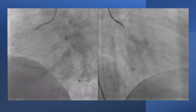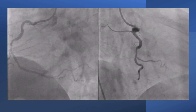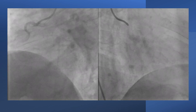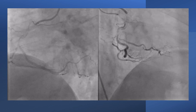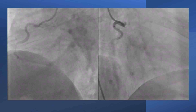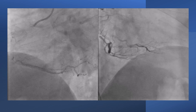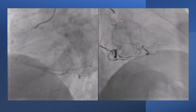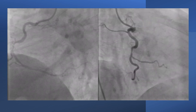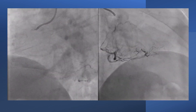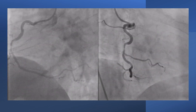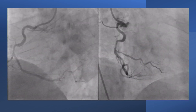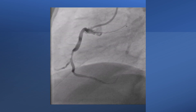This is a 50-year-old man scheduled for PCI to a mid-RCA lesion. We can see multiple curves in the artery, and in anticipation of difficulties in delivering balloons and stent, an AL amplus left guiding catheter was used. Multiple views are needed to appreciate the curves and the angles — this is the LAO view, the RAO view, and the lateral view.